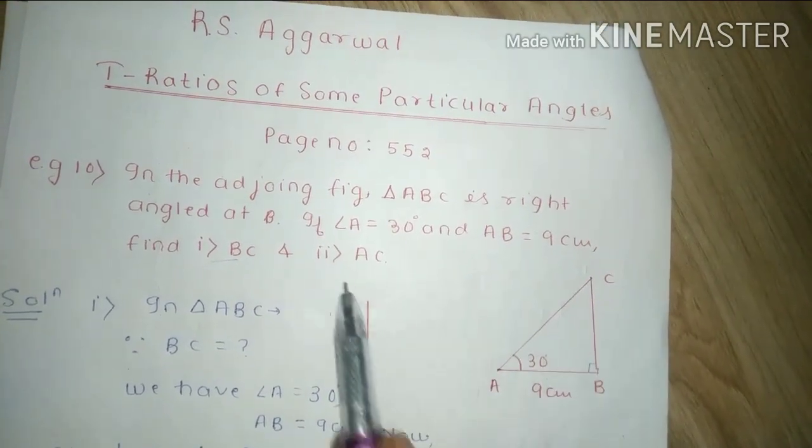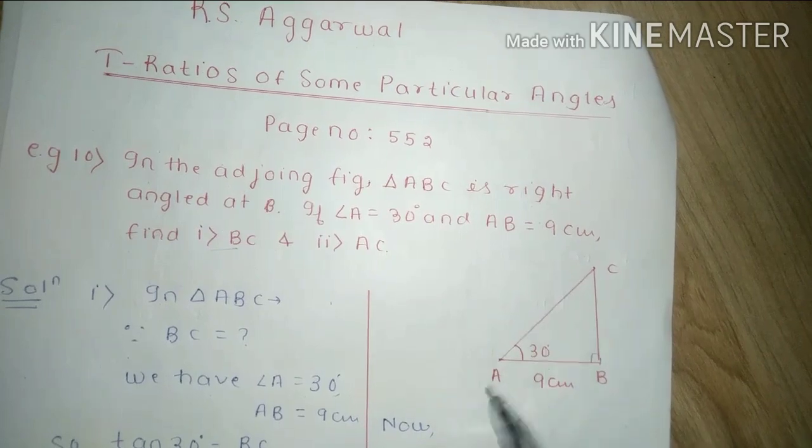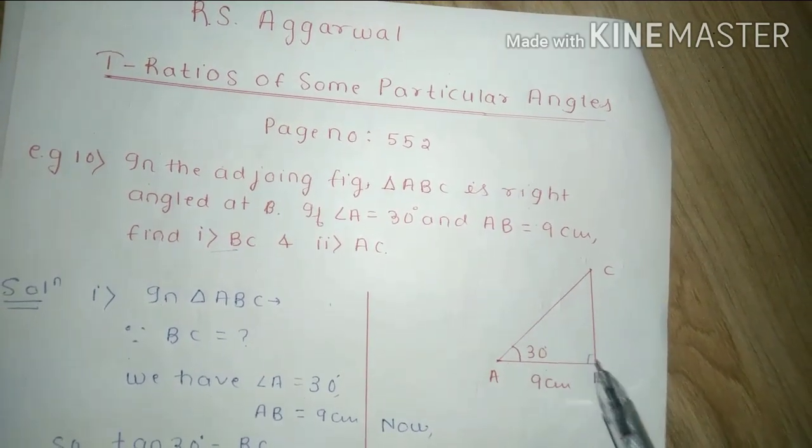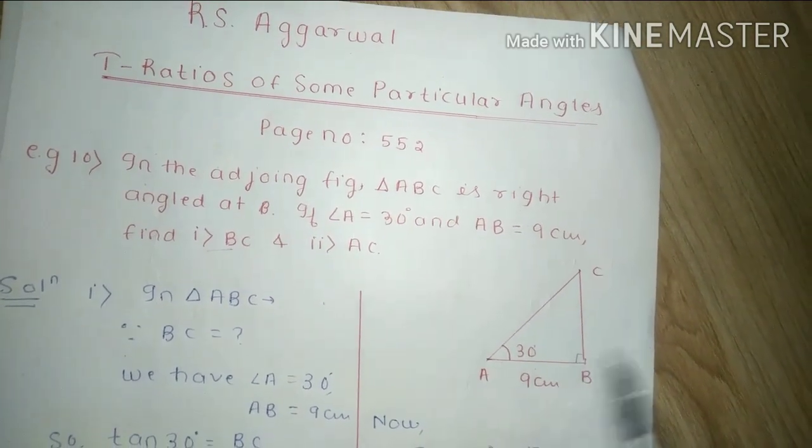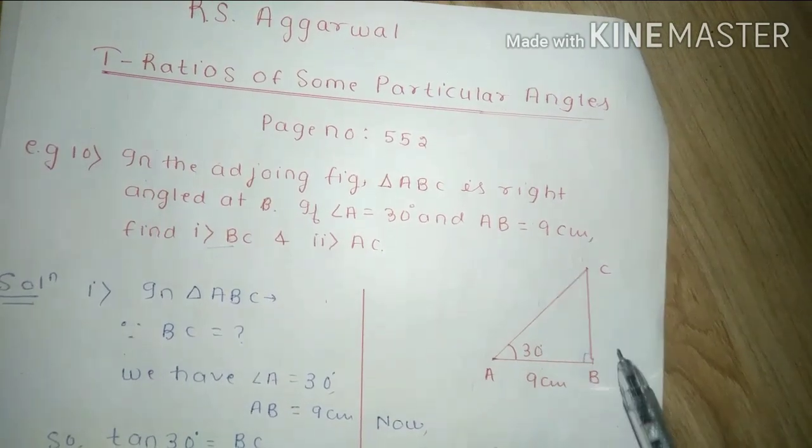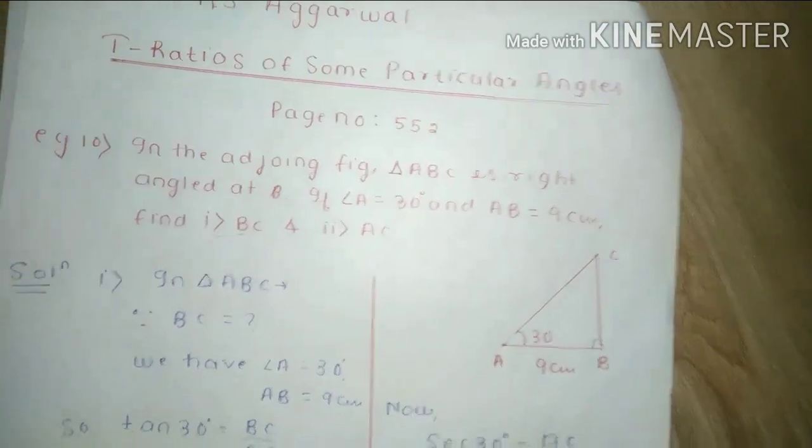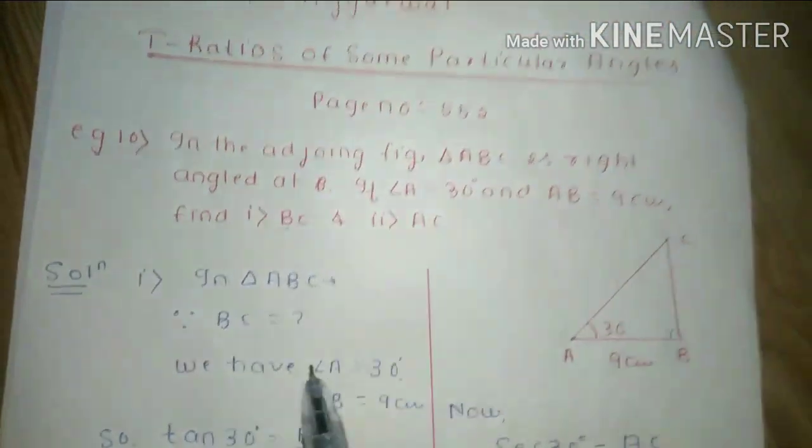BC is perpendicular according to angle C. So first of all we have to solve this.